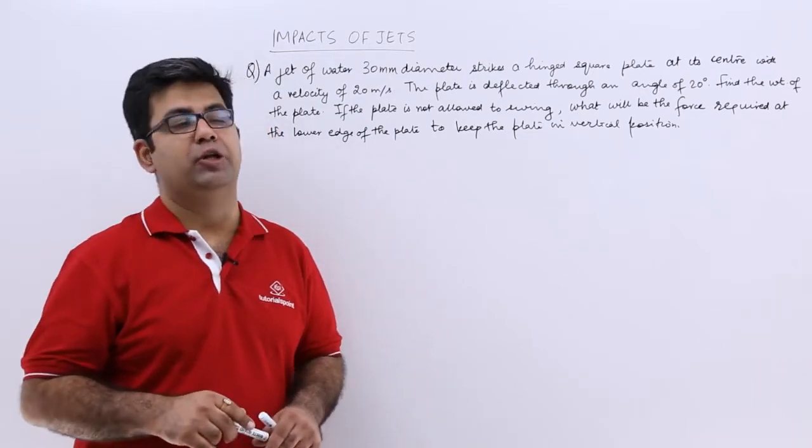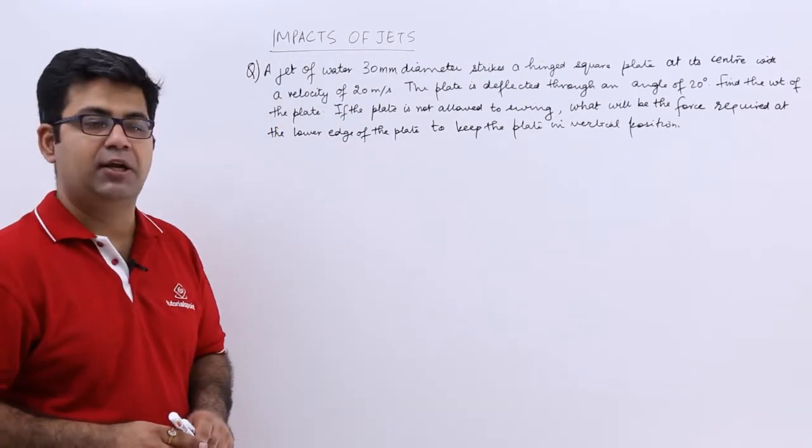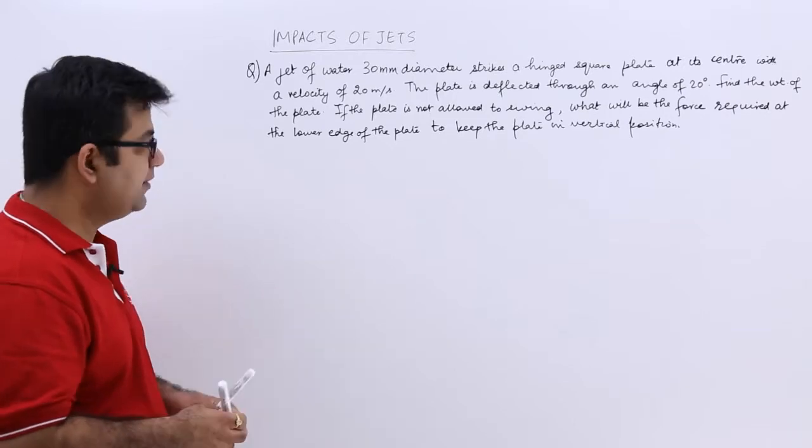Now let's look at one more question on the topic of hinged plates. The question says that a jet of water, 30 mm in diameter, strikes a hinged square plate at its center with a velocity of 20 meters per second.